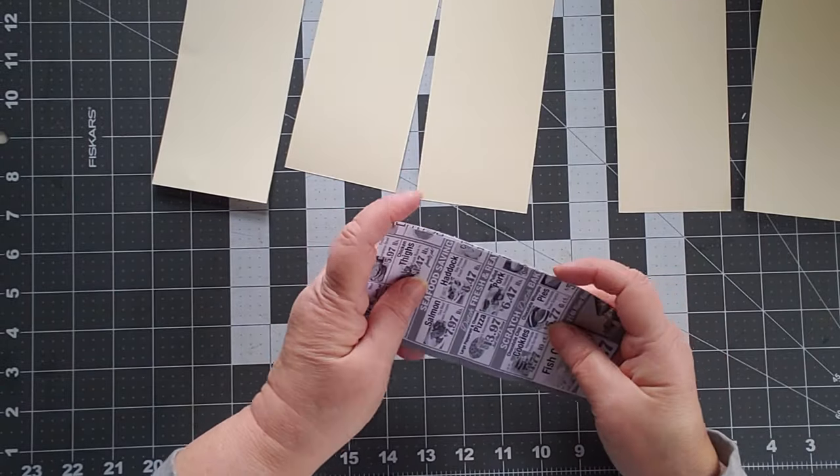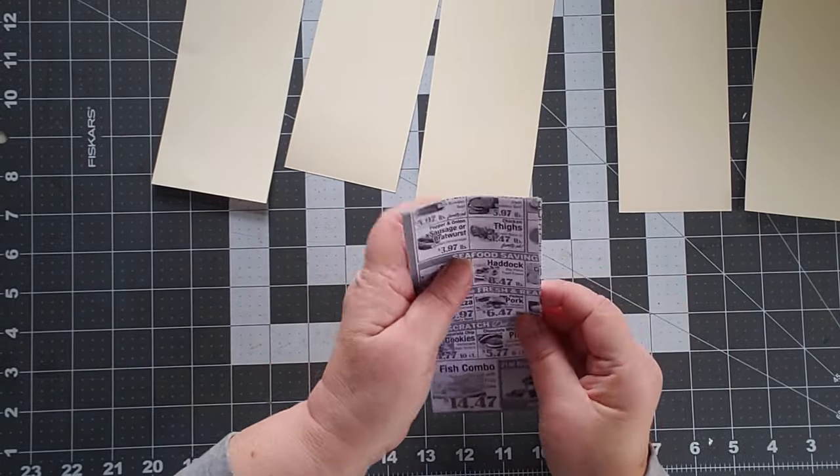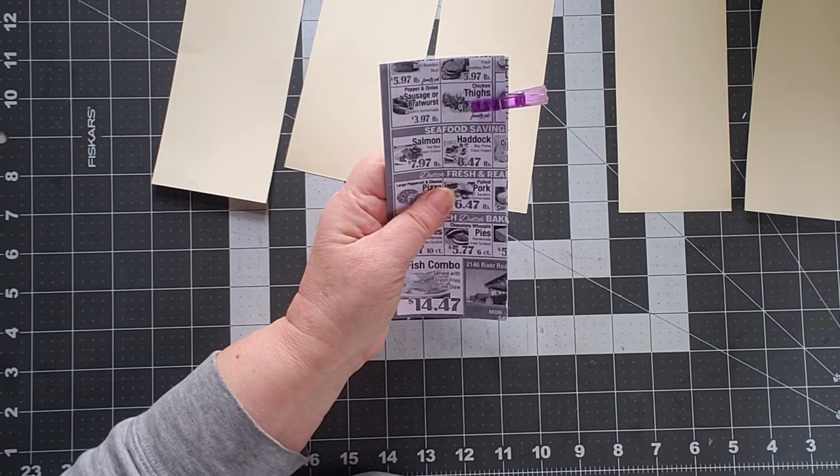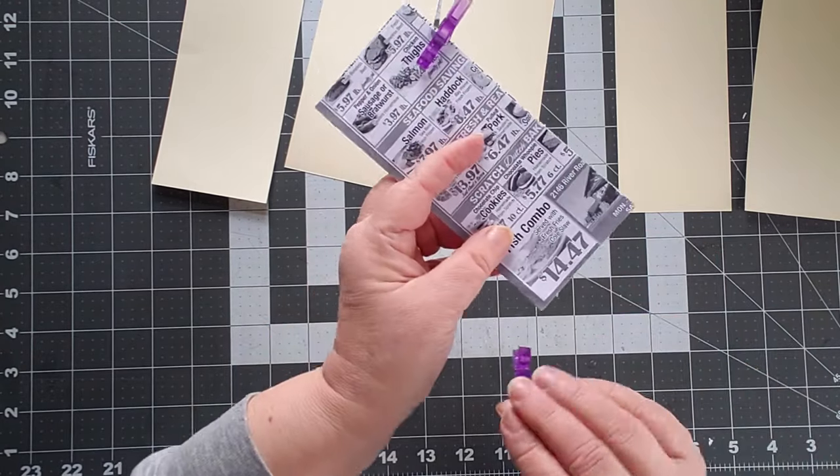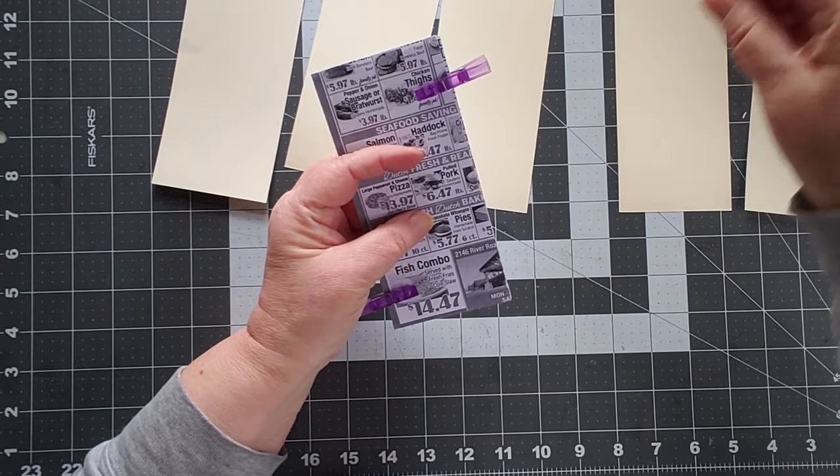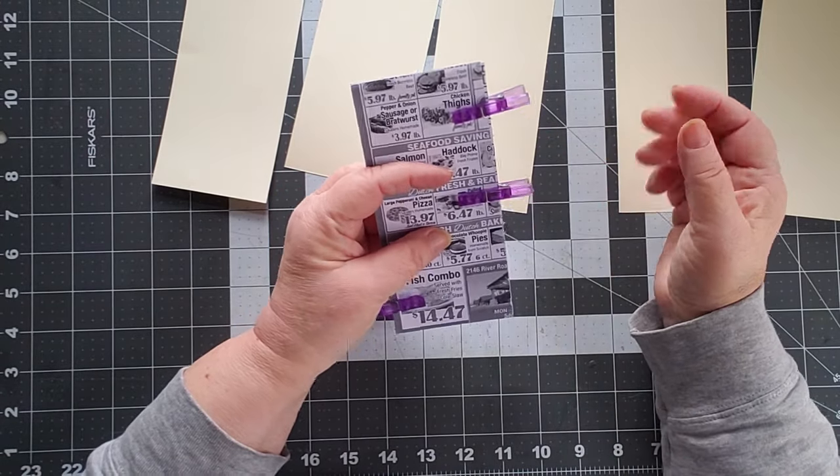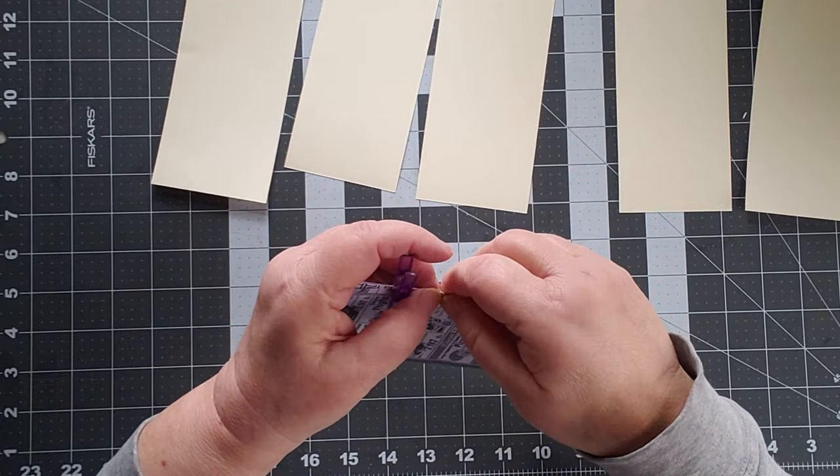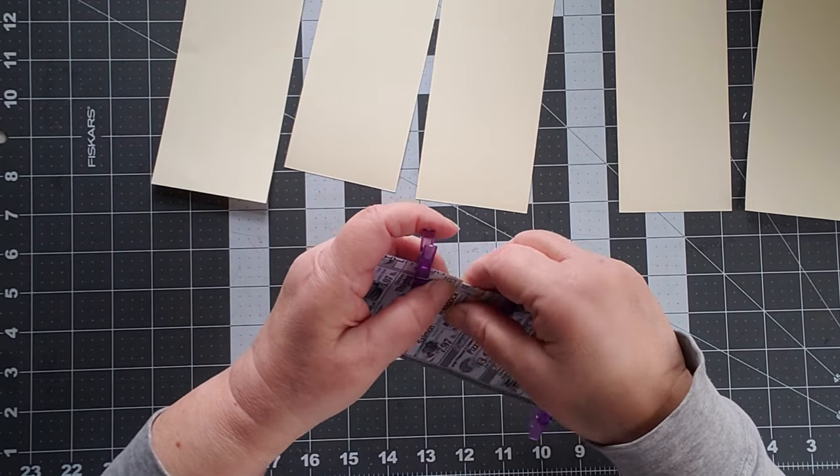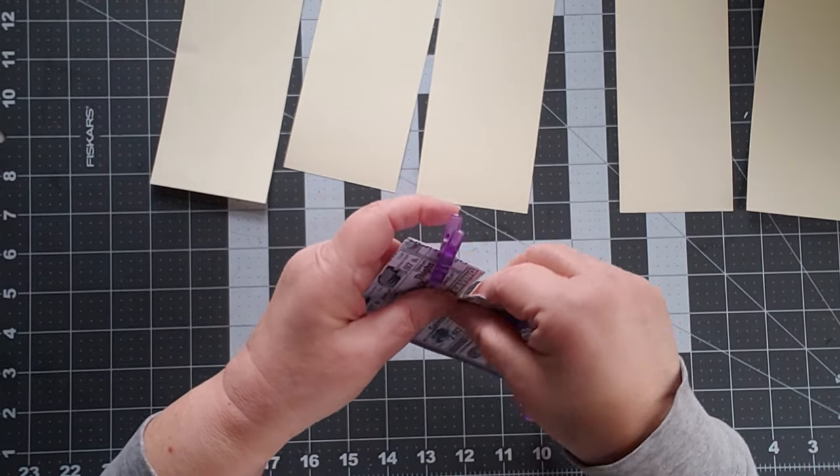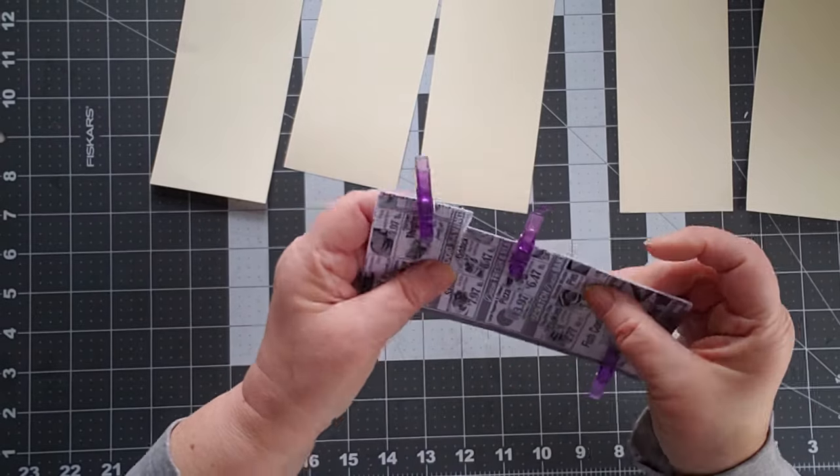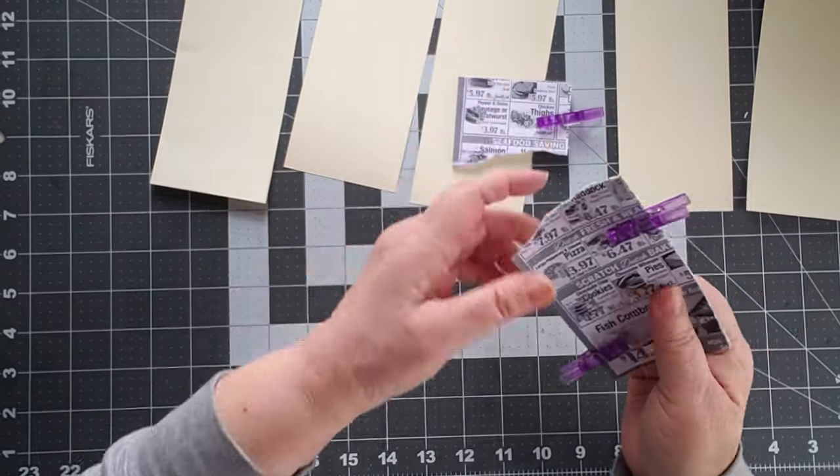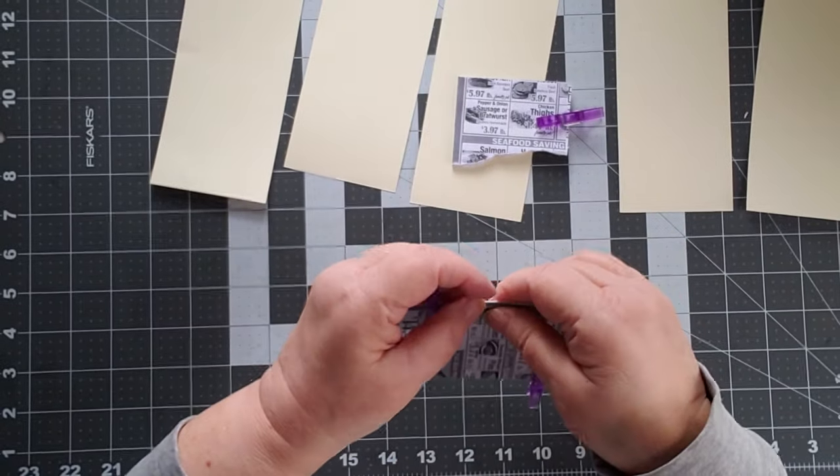So what I'm going to do is take all five of these and I'm going to clip them together in three spots. I'm going to clip them there. I'm going to clip them down here. And I'm going to clip them here. Now you can do, you can use whatever you want for your clips. If you want to use paper clips, that's fine.